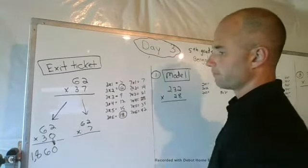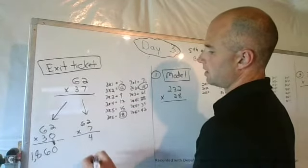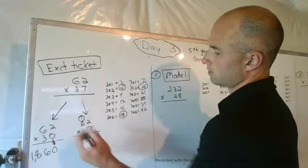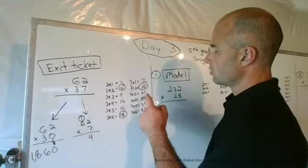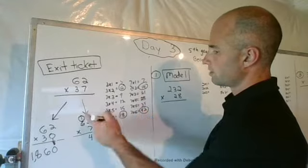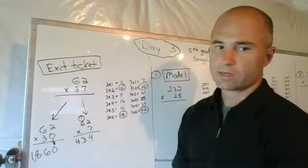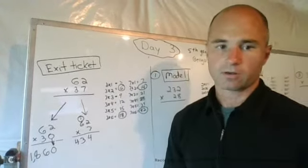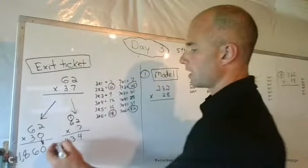No regrouping there. Two times seven is 14. Gotta carry the one though. Six times seven is 42 plus the one equals 43. So that's my step one.